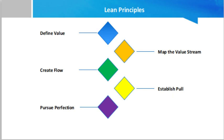The fourth principle is establish pull. Inventory is considered one of the biggest wastes in any production system. The goal of a pull-based system is to limit inventory and work-in-progress (WIP) items while ensuring that the requisite materials and information are available for a smooth flow of work. A pull-based system allows for just-in-time delivery and manufacturing, where products are created at the time they are needed and in just the quantities needed, based on the needs of the end customers.